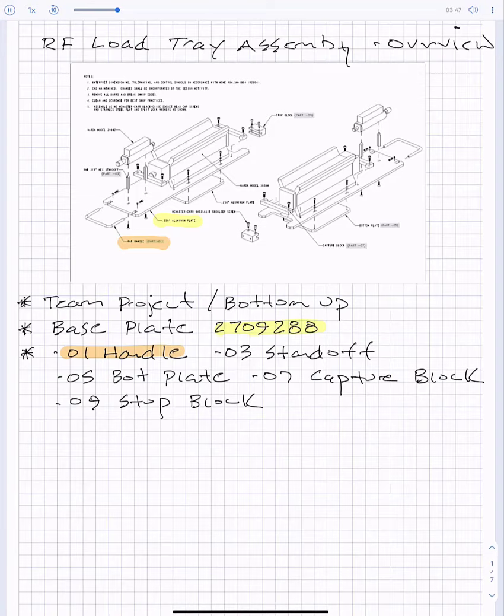The next part is this dash-03 standoff, which is right here. Again, this is going to be a part that's going to be specified by the RAF hardware data sheet. So you're going to go to the RAF hardware website, browse the literature, and find a 3/8 inch hexagonal male-female aluminum standoff that will meet the requirements of the design. And I didn't mention that on the handle—the handle is also made of aluminum. All these parts are going to be made out of aluminum, and you're going to specify the material and finish based on your design expertise.